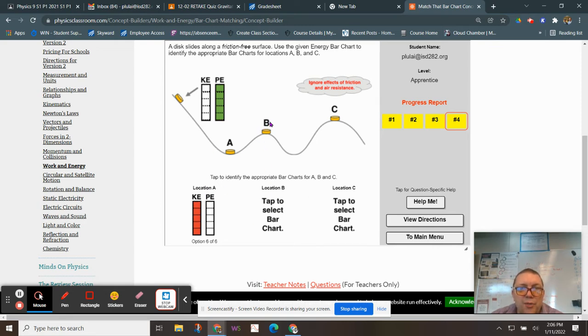Location B. So now this one is a little bit higher than A, so it should have some potential energy. It should still have some kinetic energy, and it should have a total of five bars.